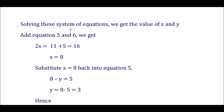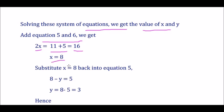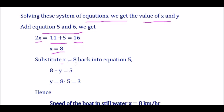Adding Equation 5 and Equation 6: 2X = 5 + 11 = 16, so X = 8. Substituting X = 8 back into Equation 5: 8 − Y = 5, giving Y = 8 − 5 = 3.